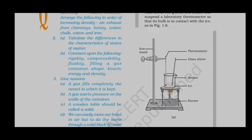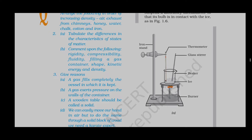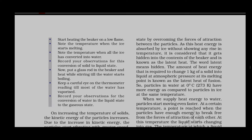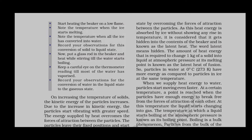Set up a glass stirrer and a thermometer in a stand. We are going to observe the conversion of ice into water. Start heating the beaker on a low flame and note the temperature. When the ice starts melting, note the temperature, and record when all the ice has converted into water.